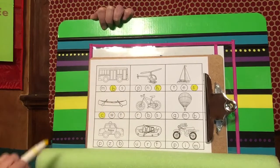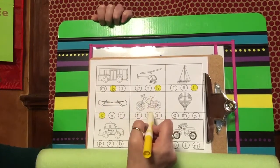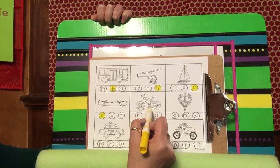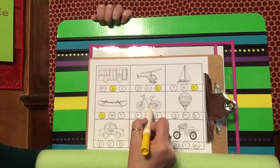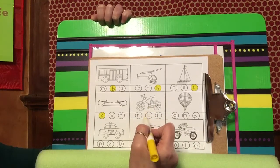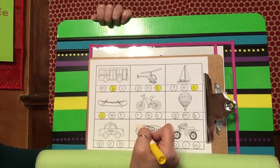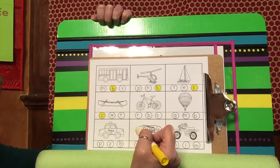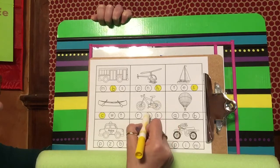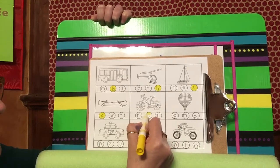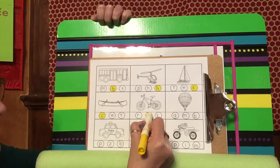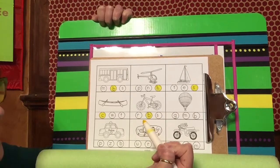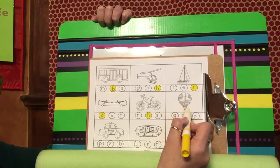Oh boy, I bet a lot of you have one of these. That is a bicycle. Bicycle starts with buh buh. Shout it out. I bet you got it. It's B for bicycle. Color that one in.